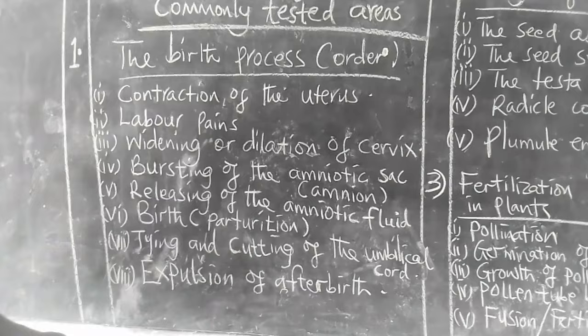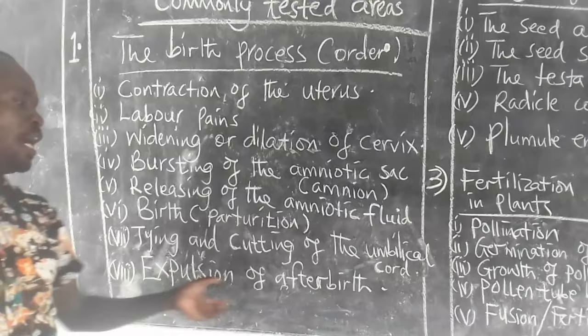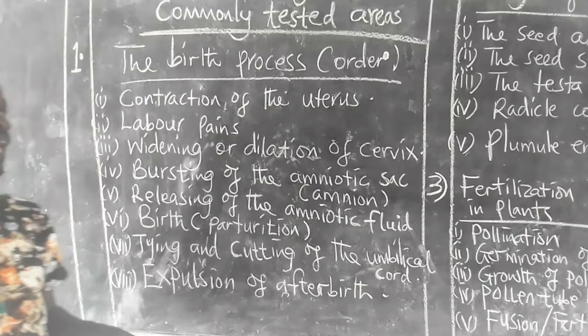Number 8: expulsion of afterbirth. Examples of afterbirth: we have placenta, umbilical cord, among others.